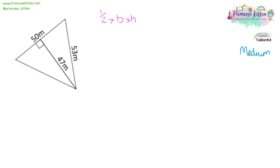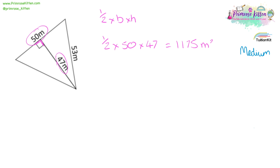Moving on to some medium questions now. These are ever so slightly trickier. We're still using the same equation, half times base times height, but we have a slightly larger triangle and our right angle is in the middle. We need to use the numbers that are around the right angle. So here is our right angle, so we need this number and this number. It doesn't really matter which way round we put them into the equation. So we're going to do half times 50 times 47, which equals 1,175 metres squared.